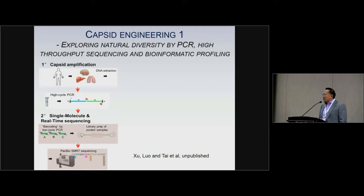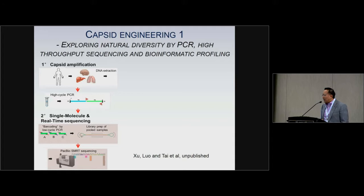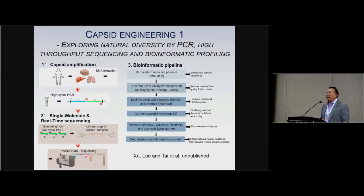In terms of natural diversity, we started in 1982 in Jim Wilson's lab using regular sequencing and TOPO cloning. Now in our lab, with work by Guangchao Xu, Li Luo, and Phil Tai, we've developed a high-throughput process using next-generation sequencing with a sophisticated bioinformatics pipeline. We are now able to generate thousands of AAV capsids from human or primate tissue from whatever sources of interest.